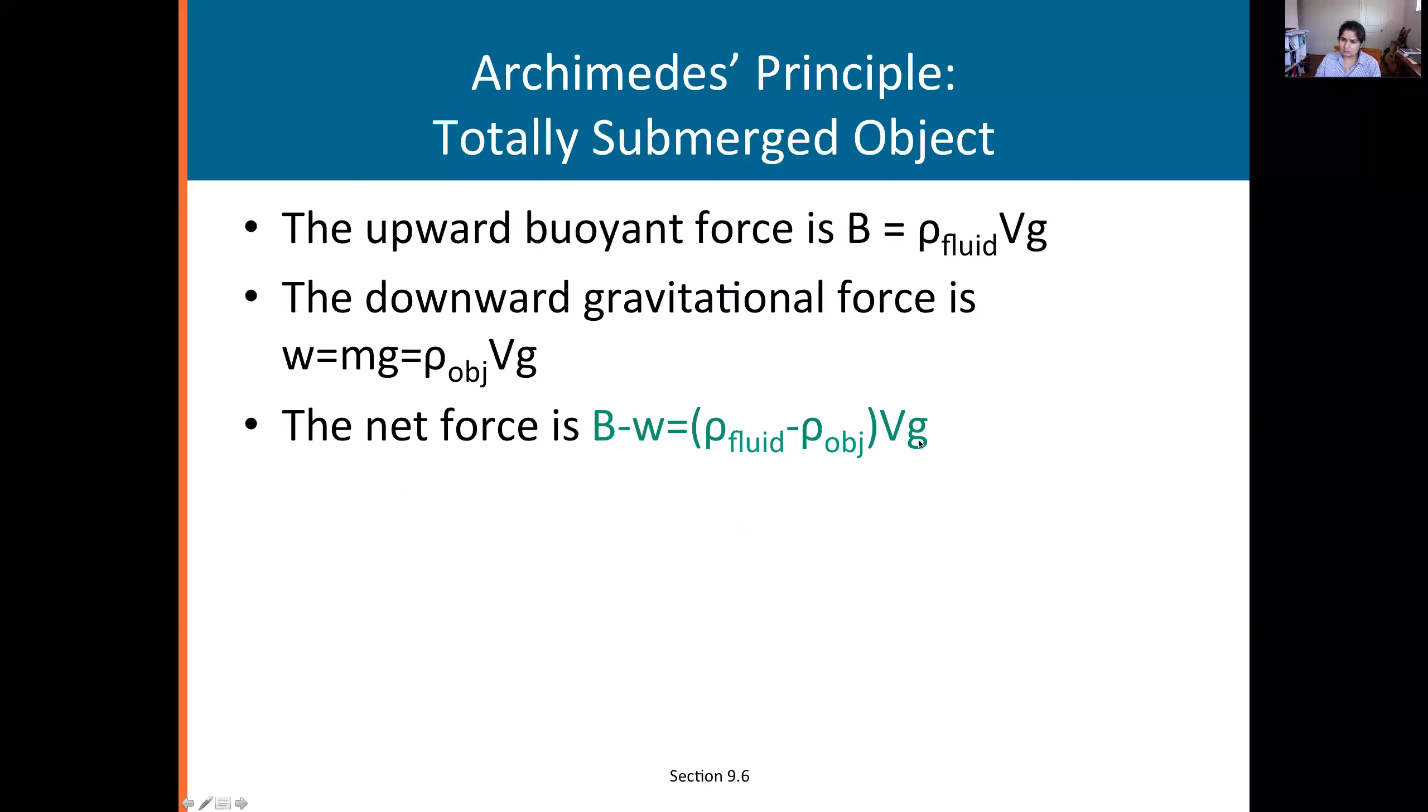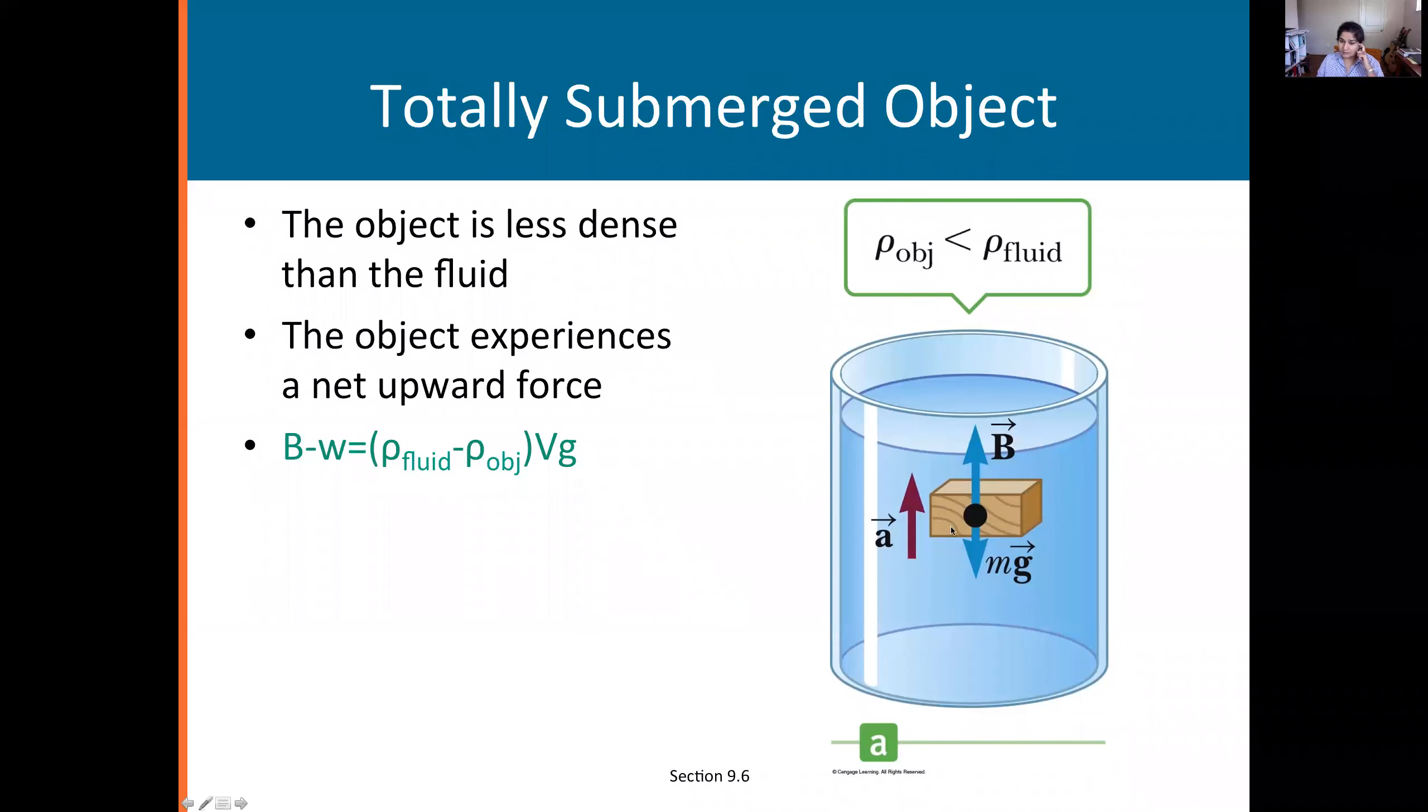Here's my object with a certain volume, here's the buoyant force, here's the weight mg. If ρ_fluid is greater than ρ_object, we're going to have a net upward positive force, so the direction of my net force is the same direction as my acceleration. The object will accelerate upwards. When my density of solid is less than the density of the fluid it's immersed in, the object will float.